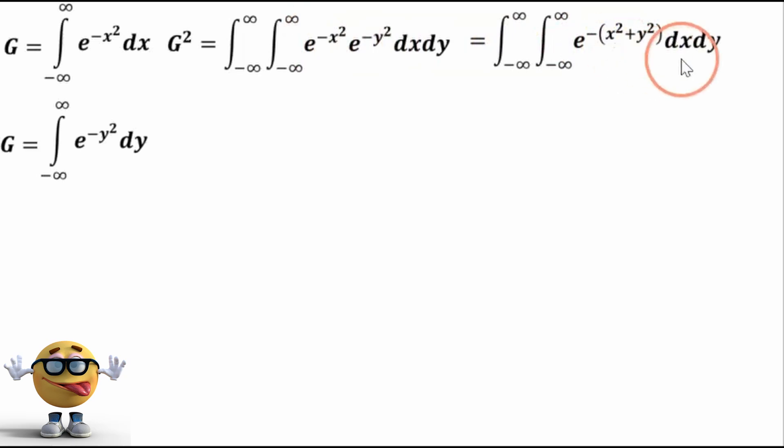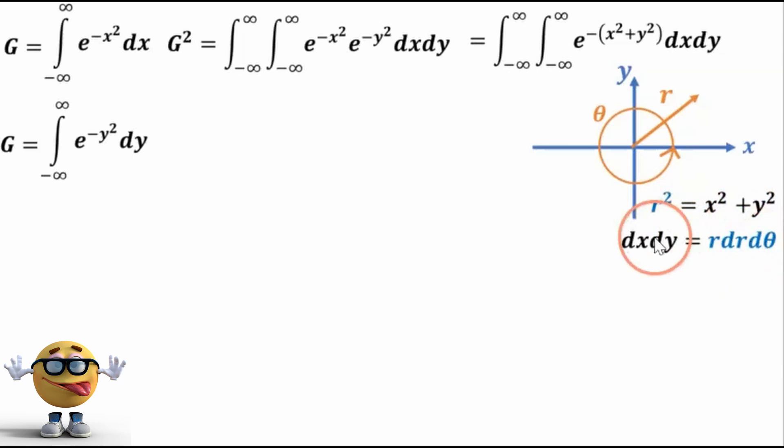Now in terms of x and y, if we look at the x, y Cartesian coordinates, we're going to convert this to polar coordinates, where we go from r goes from 0 to infinity, and then theta can go all the way around. So in polar coordinates, r squared is x squared plus y squared, and dx dy equals r dr d theta.